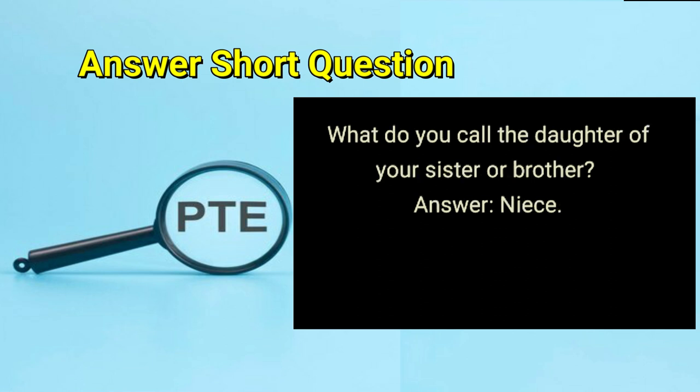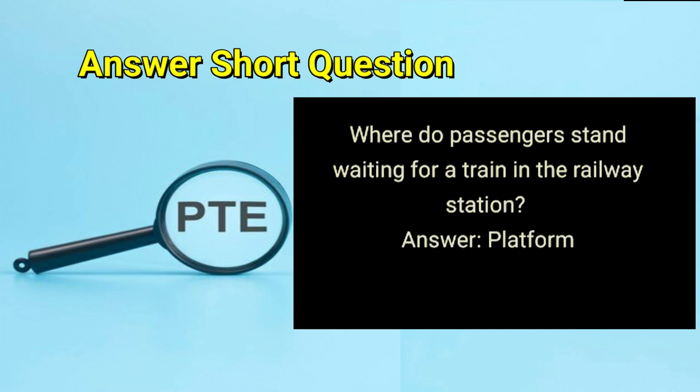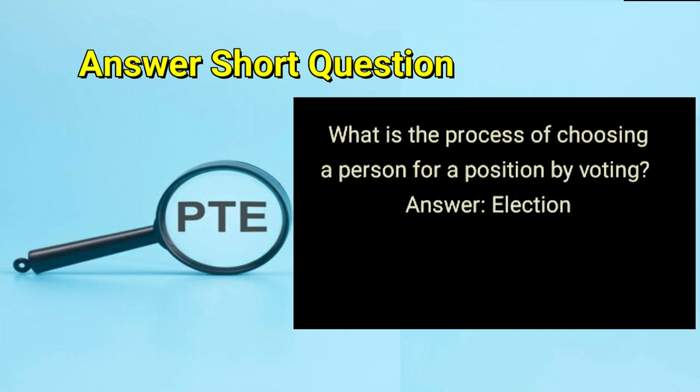What do you call the daughter of your sister or brother? Answer: niece. Where do passengers stand waiting for a train in the railway station? Answer: platform. What is the process of choosing a person for a position by voting? Answer: election.